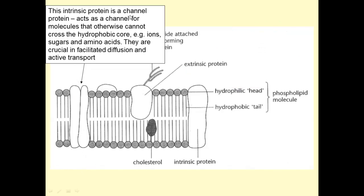This here is an intrinsic protein. And this one is a channel protein. It acts as a channel for molecules that otherwise cannot cross the hydrophobic core. And we'll think about that more in the next video. But, for example, ions and sugars and amino acids cannot cross this hydrophobic core. These channel proteins are going to be crucial in facilitated diffusion and in active transport.